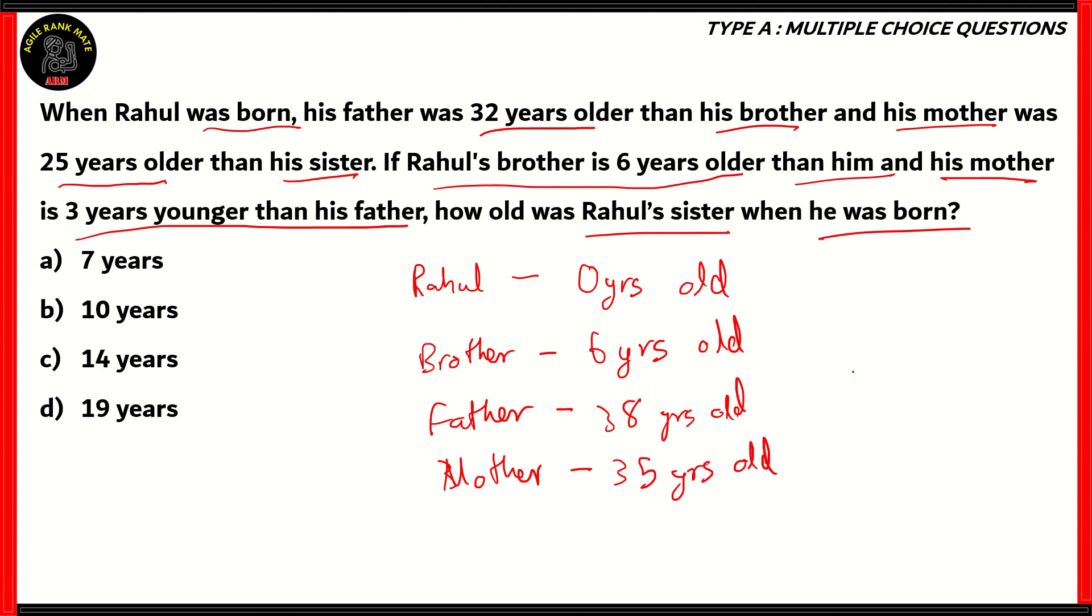Now, we know that when Rahul was born, his mother was 25 years older than his sister. So what does that mean? It means we can calculate the sister's age by subtracting 25 from 35. 35 minus 25 gives you 10. So Rahul's sister was 10 years old when he was born.